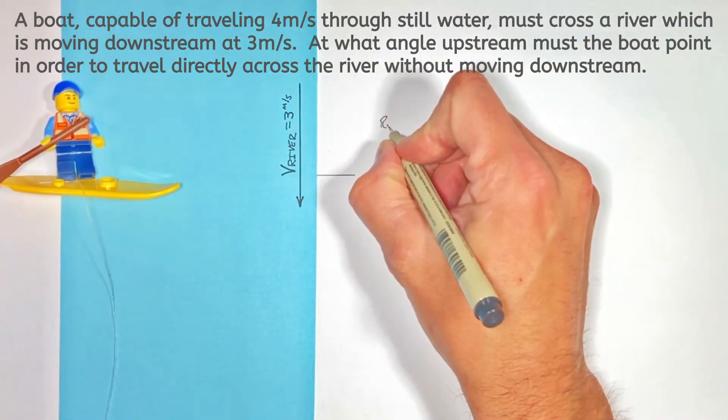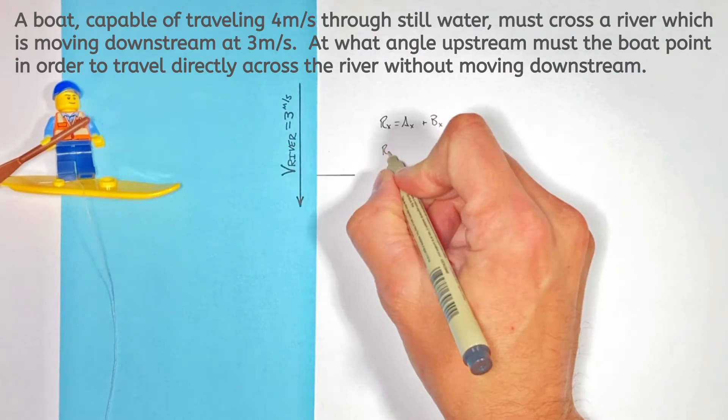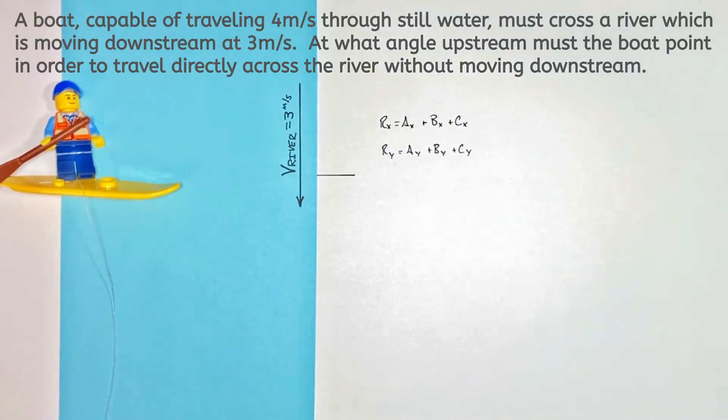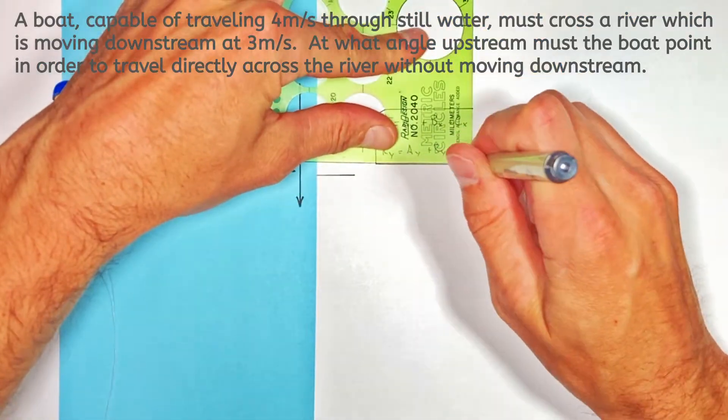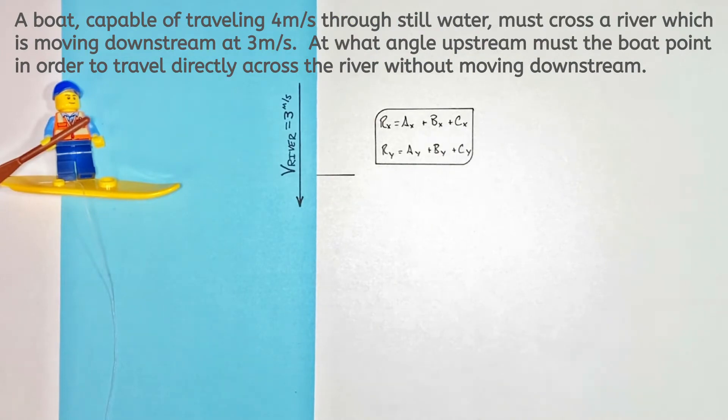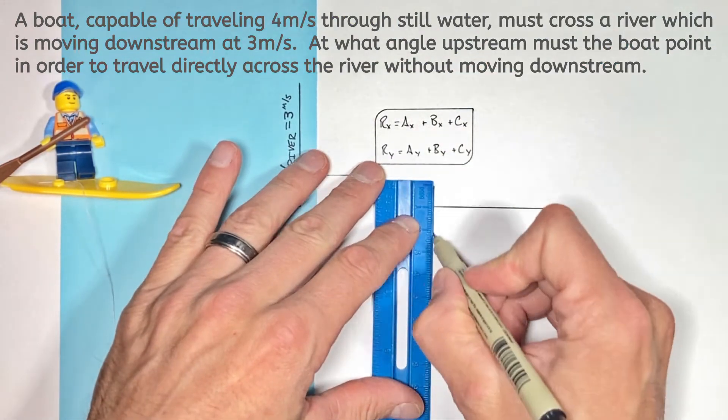Now, deep down, this problem is just adding together vectors in two dimensions, so we'll use our vector addition equations. But there's a trick in this problem that gets lost on most people, so I'm going to set up a table to show you what's really going on.